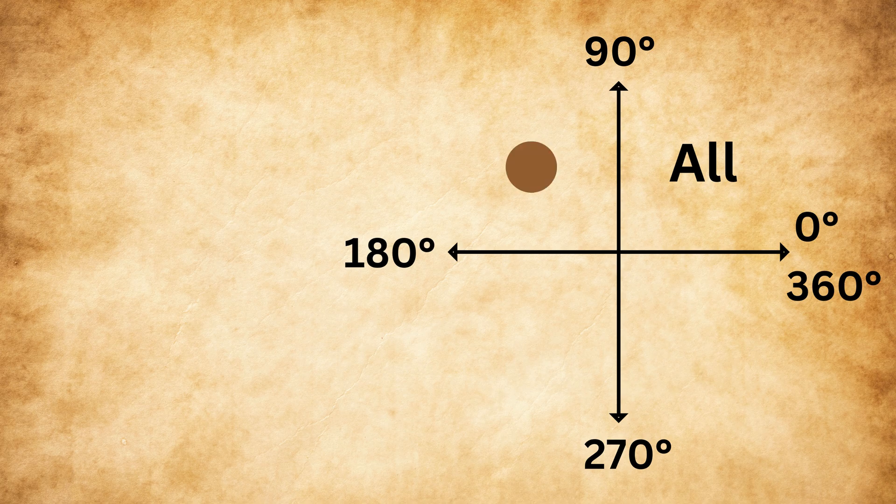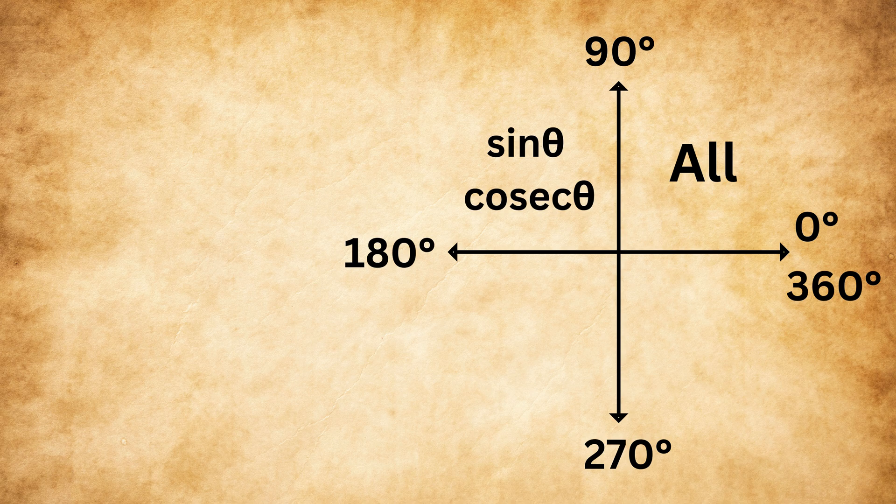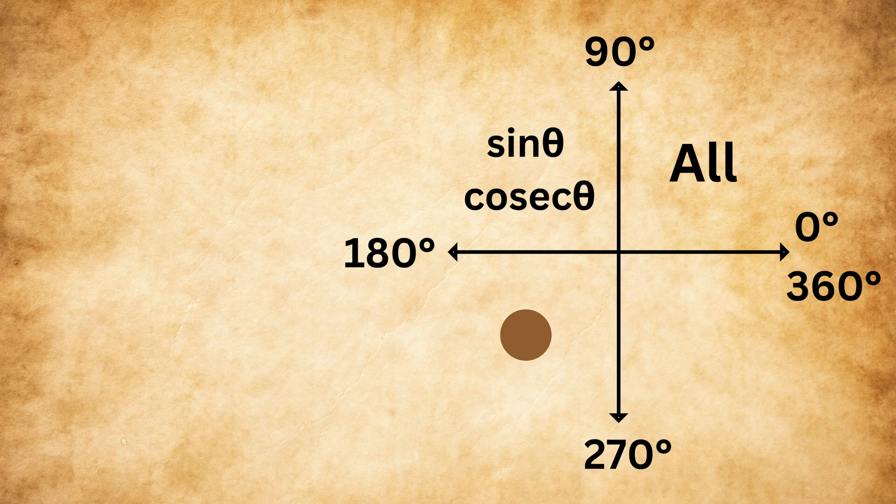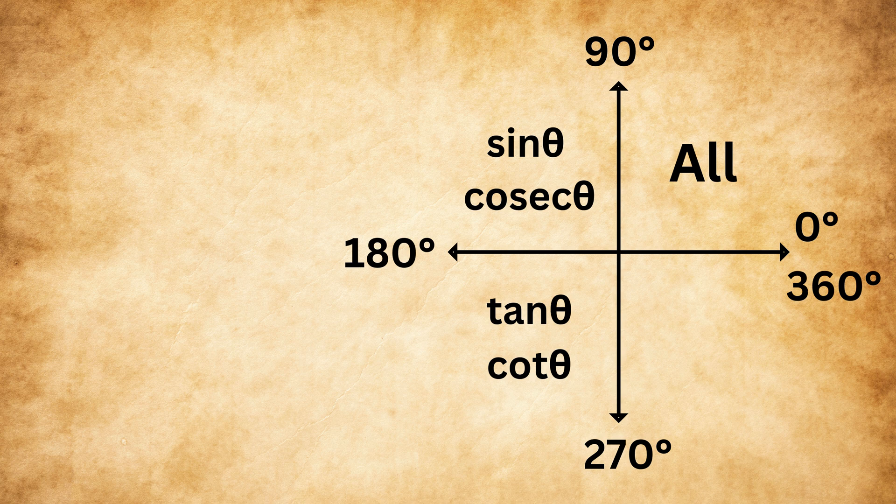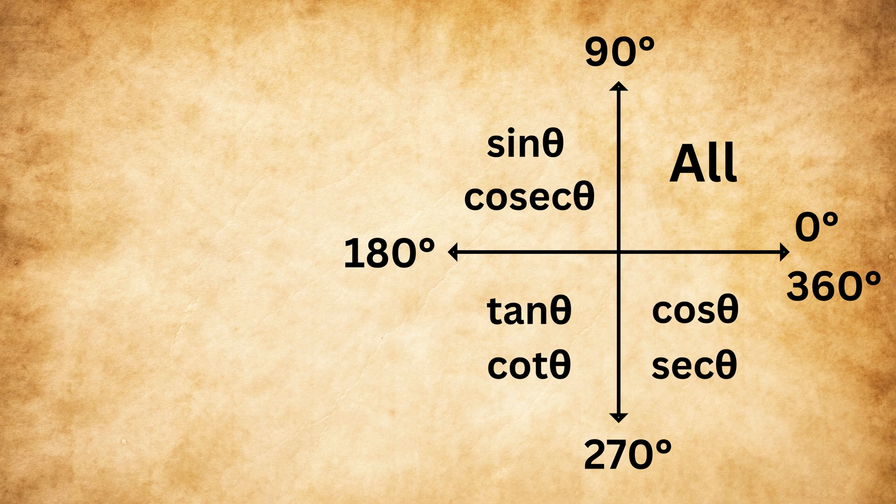Now in the second quadrant, only the sine and its reciprocal cosec are positive, and all others are negative. In the third quadrant, only tangent and cotangent are positive, and the rest are negative. In the fourth quadrant, only cosine and sec are positive, and all others are negative.